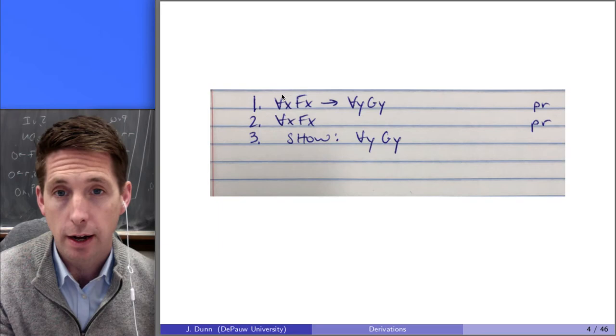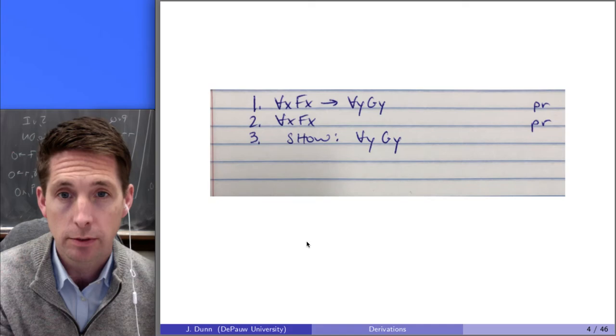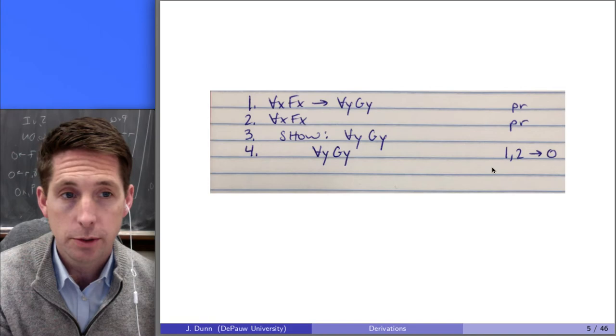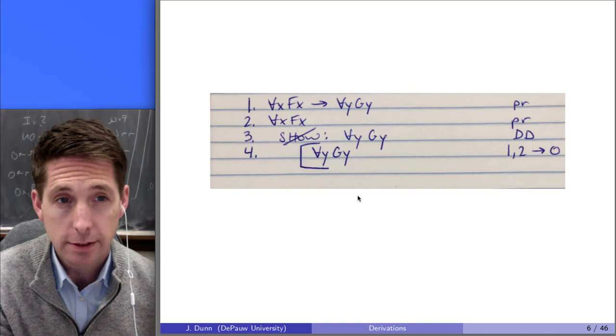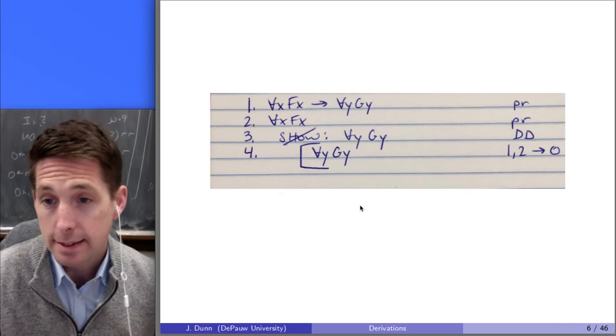Well, from 1 and 2, hopefully you can see that we can apply arrow-out. Because again, we've got A arrow B, and we've got A by itself. So we can get B here. That is, universal-Y G-Y follows from 1 and 2 by arrow-out. And that's what we're trying to show. So the proof is done. It's just a simple direct derivation.